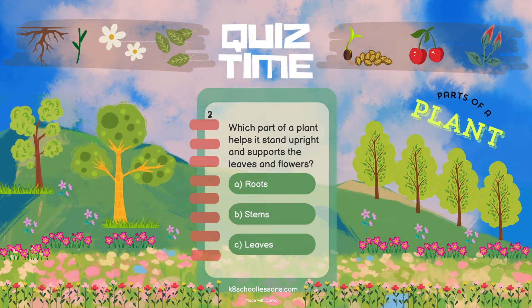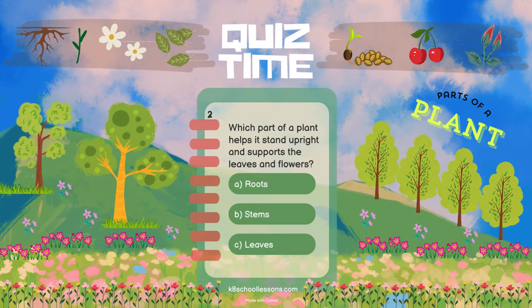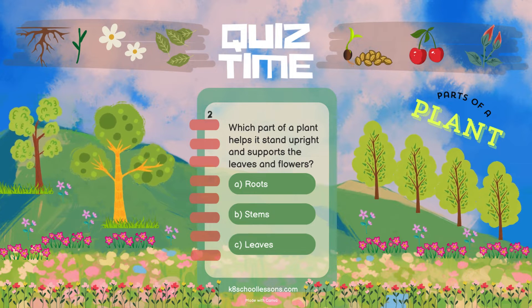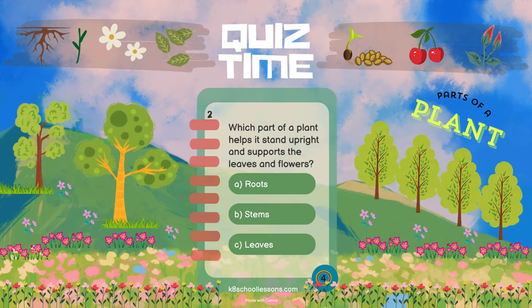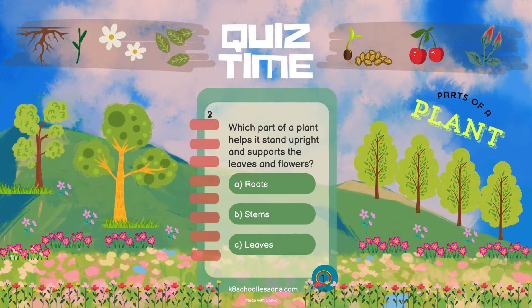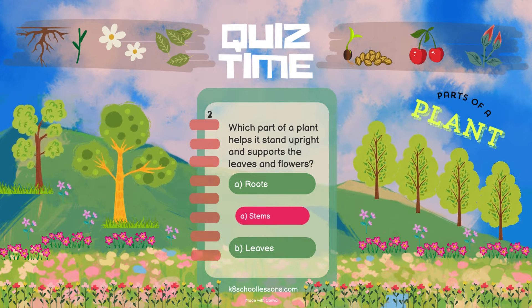Which part of a plant helps it stand upright and supports the leaves and flowers? Stems.